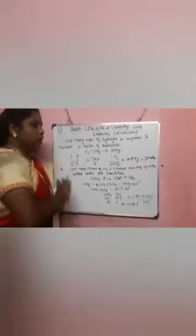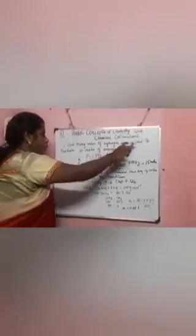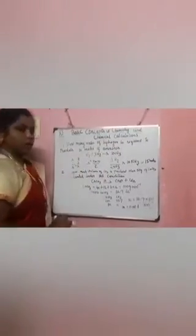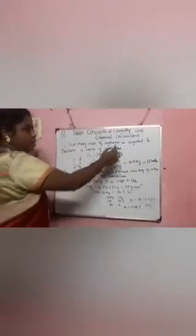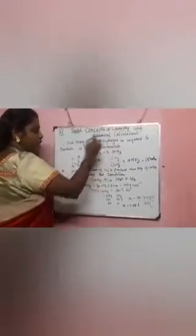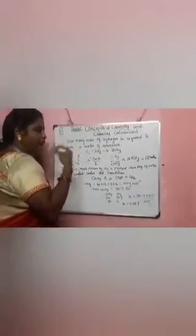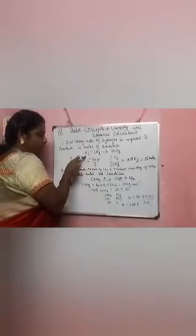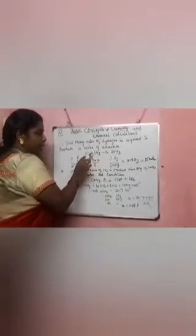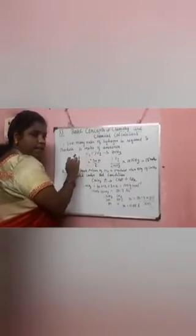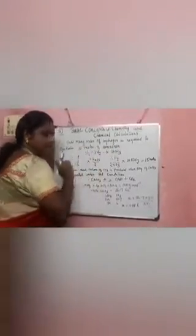Now a problem based on stoichiometry. How many moles of nitrogen are required to produce 10 moles of ammonia? Stoichiometry always works with a balanced equation. The equation is: N2 + 3H2 → 2NH3. Let us confirm it is balanced: in the reactant there are 2 nitrogen atoms, and in the product also 2. Hydrogen: 6 on the reactant side and 6 on the product side. So it is a balanced equation.